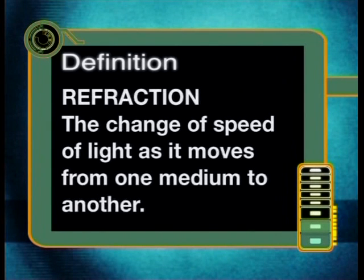From everything we have just discussed, do you think that you could write a definition for the refraction of light? Refraction is the change of the speed of light as it moves from one medium to another. This change in speed may result in a change of direction, depending on the angle at which the light hits the boundary. Now we know what refraction is and why light changes direction. We need to see if we can predict which way the light will move, so let's cross over to the lab.